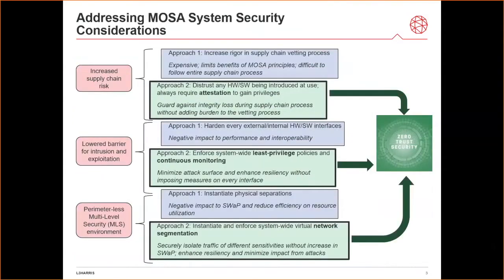Now I want to look at these security implications in more detail and see how we can mitigate them traditionally and how a zero-trust security approach may provide better alternatives. For the increased supply chain risk, traditionally we would just expand the vetting process and increase the rigor of it, but it can become very expensive. And more importantly, if the increased rigor makes it more difficult and costly for vendors, it may reduce the incentive for them to align, which limits the benefit of having wider offerings.